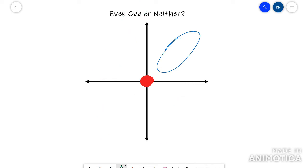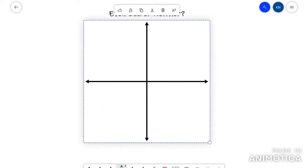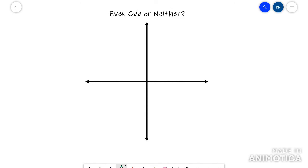Now the last one would be neither. If it's not even, if it's not odd, then it's neither. Obviously, but your teacher might try to trick you by giving you a circle.